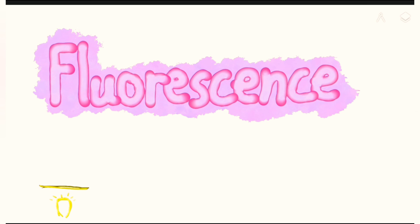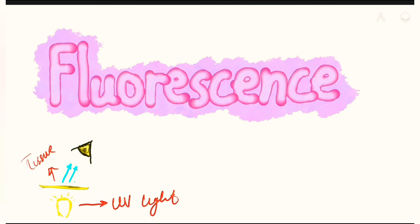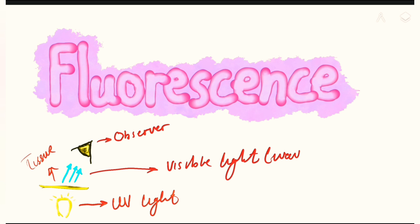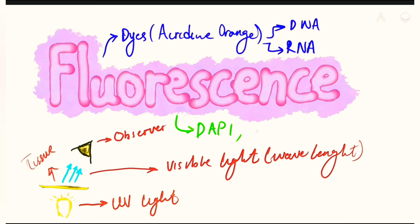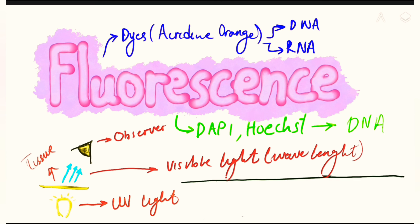Next we have fluorescence microscopy. The light source emits light onto the object, and from the object the light passes to the eye of the observer. The source of light in fluorescence microscopy is usually UV (ultraviolet) light. The tissue is placed on a slide, and the light that travels from the tissue toward the observer's eye will be visible light. This type of microscopy has its own dyes, most importantly acridine orange, which stains both DNA and RNA. There are also other dyes called DAPI and Hoechst, which stain only the DNA portion and not the RNA.